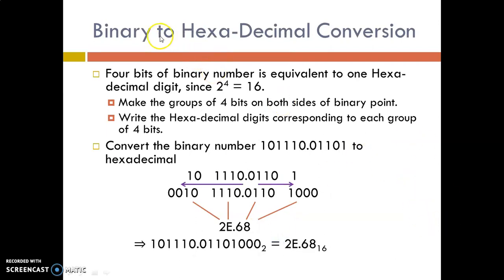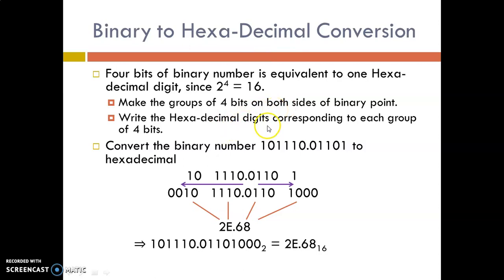Now we will see how to convert binary to hexadecimal equivalent. Since the base of binary is 2 and the base of hexadecimal is 16, 4 bits of a binary number is equivalent to 1 hexadecimal digit, because 2 power 4 equals 16. We are going to group 4 bits on both sides of the decimal point, then write the hexadecimal equivalent for each group separately.